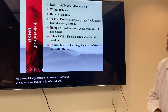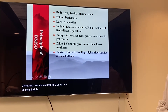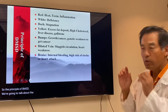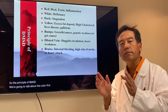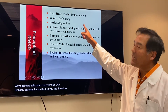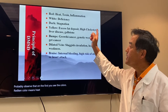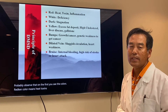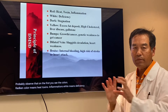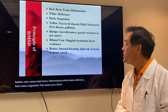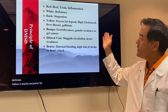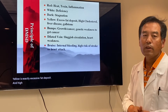The principle of DMSD — we're going to talk about color first. When you observe the tongue, the first thing you see is the colors. Red color means heat, toxins, and inflammations. White means deficiency. Dark means stagnation — your blood flow doesn't go well and it shows darkness. Yellow means excessive fat deposit and high cholesterol, liver disease, or gallstones.